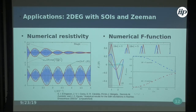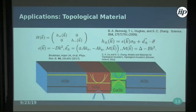That's half of the work — done using this F-function formalism. It's written up in this paper, currently unpublished and being finished. Now we try to apply this formalism to topological materials, where we model a double quantum well using the BHZ model.